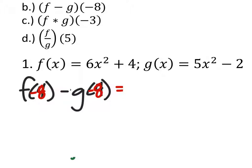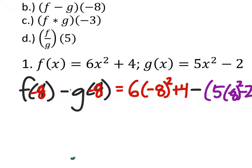So, I'm going to do f of negative eight in red. So, I got six times negative eight squared plus four. And we're going to subtract this from, and this is important. We do need parentheses on this, five times negative eight squared minus two. Sorry, I ran out of space. So, I got six times 64.